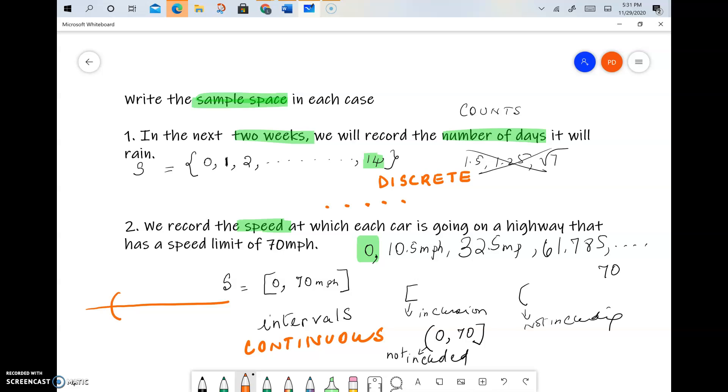And it includes all starting at 0, ending at 70. Every number in between is included, and that's why it's called continuous.